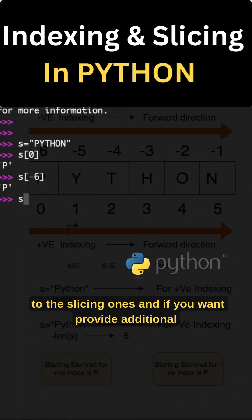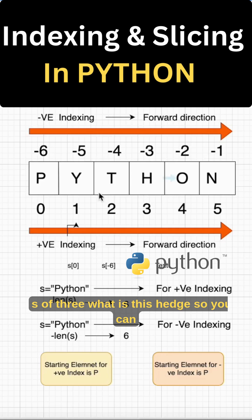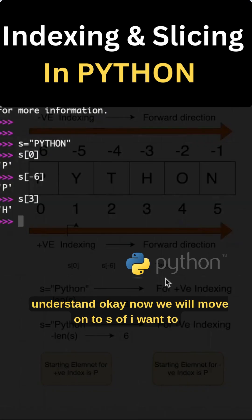If you want to provide additional values, you can give S of 3. What is S of 3? What is this? H. So you can clearly observe this based on this diagram. You can clearly understand.